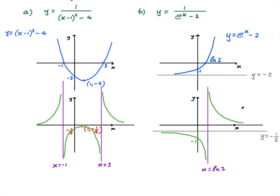Make sure you indicate all asymptotes clearly. If the question asks, you could write at the side: asymptotes are y equals 0, y equals negative one half, and x equals ln of 2. Sometimes the question also asks you to show axis intercepts and turning points. Check what the question says in the exam.